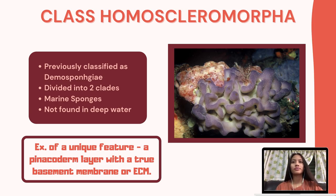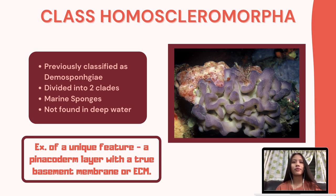Class Homoscleromorpha are marine sponges that occur in a range of colors. Since they live in cryptic habitats, they are often overlooked. They are more common near shore and do not occur in deep water. Formally they were classified as Demospongiae, but because of some unique features they possess, they have been placed in a class of their own. One such feature is a pinacoderm layer with a true basement membrane, or ECM. Homoscleromorpha are divided into two clades: one whose members lack spicules entirely, and the other with spicules that do not form around a central longitudinal filament.